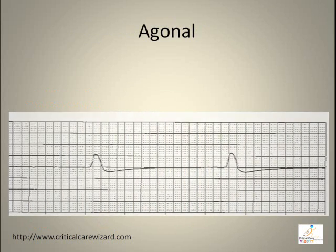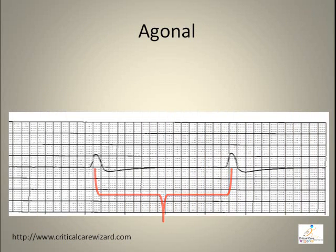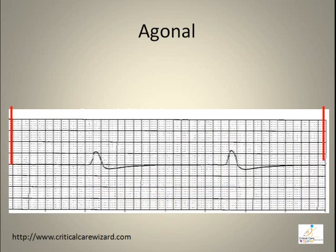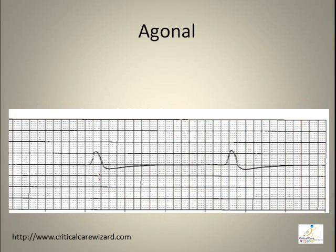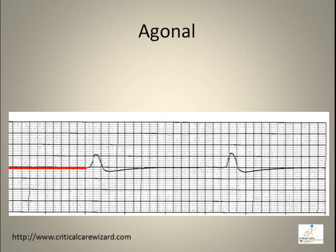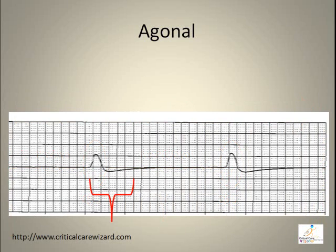Agonal rhythm features a predictable rhythm, a rate less than 20 beats per minute, a missing P wave, and a QRS duration of more than 0.10 seconds.